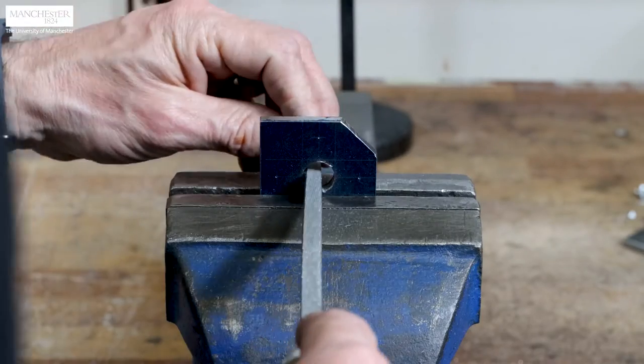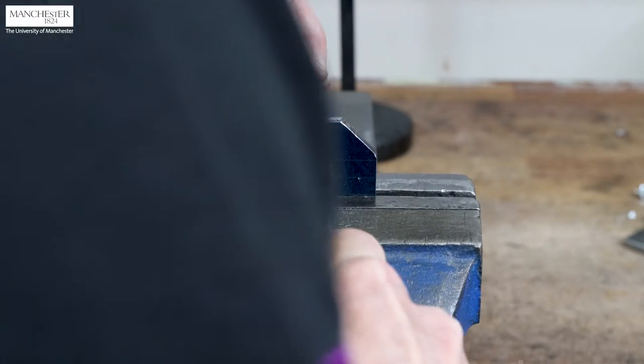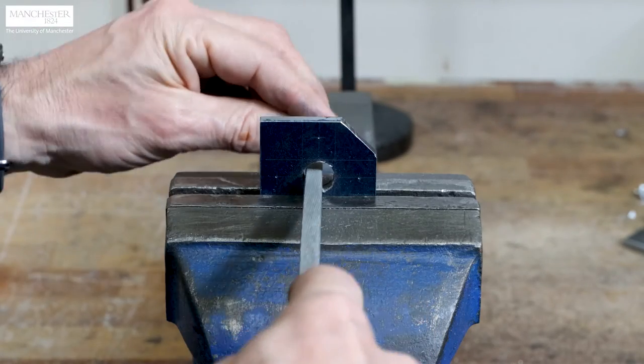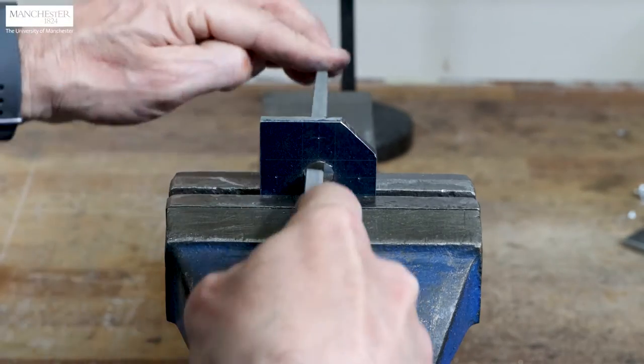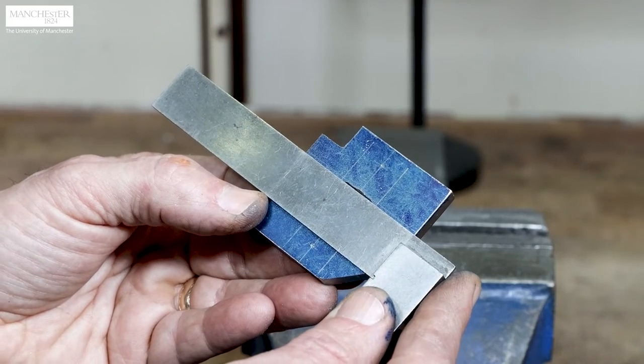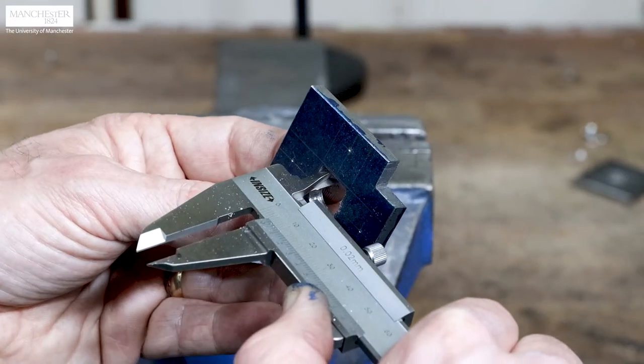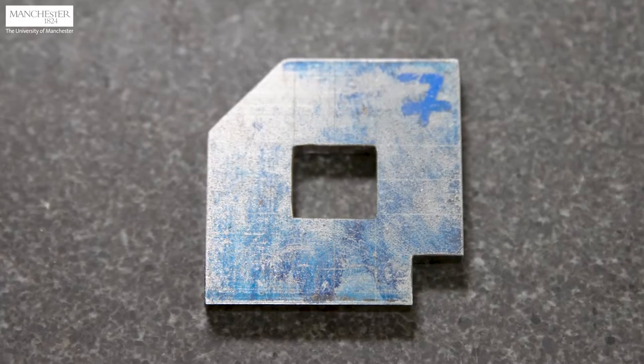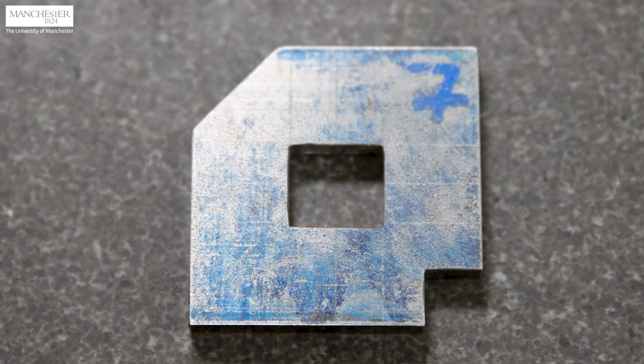Fix the part to the bench vise and use the square file to file out the central rectangular hole to the pre-marked reference lines. Regularly check with the square that the hole is square to the edges and the size is correct with the vernier caliper. We produced the rectangular central hole.